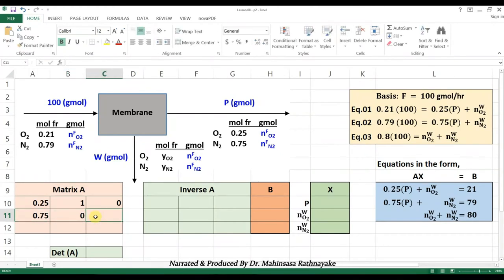0.25, 1, 0, 0, 0.75, 0, 1, 0, 1, 1. Then the constants in the right hand side of the equations as matrix B, that is 21, 79 and 80. Before solving, we should find the determinant of the matrix A.